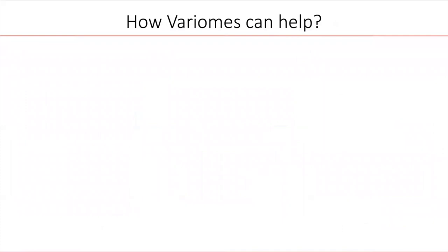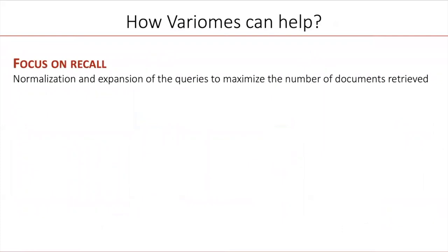So how can Variome help? First, Variome is focused on recall. Our objective is to try to retrieve all possible relevant documents, and the recall is very important for a rare variant, for which it is sometimes complicated to retrieve a single document. So to maximize the recall, the queries are automatically normalized and expanded.